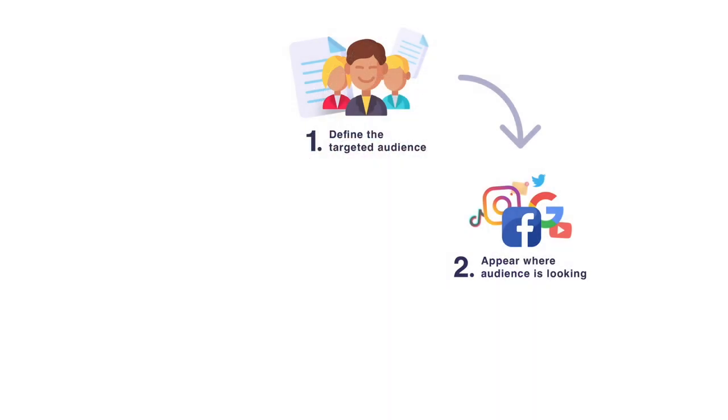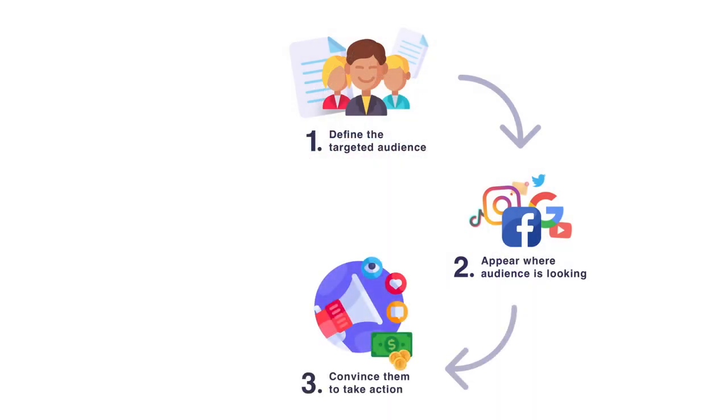The third step is to convince the target audience to take action. This taking action can be anything — you can convince them to buy a product, sign up on your email list, complete a survey, or follow you on your social media account. This is where the marketing strategies come in — the strategies that help you convince people to take an action. As we go forward we will go deep into each of these steps, and I will show you a lot of examples and we will practice with real life examples.